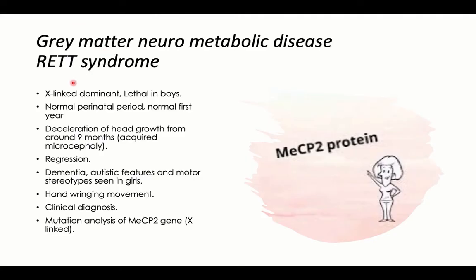In Rett syndrome — an X-linked dominant condition lethal in boys — a girl has a normal first year of life. Then at around 9 months of age, deceleration of head growth starts, resulting in acquired microcephaly. There is normal head circumference at birth and during early infancy, but in late infancy, deceleration of head growth occurs due to the MECP2 gene mutation.